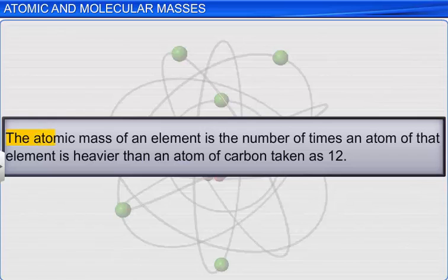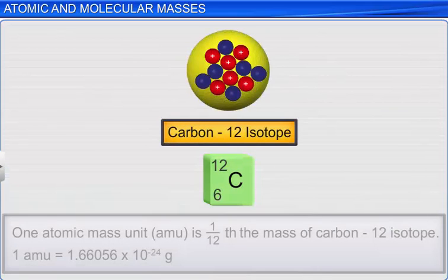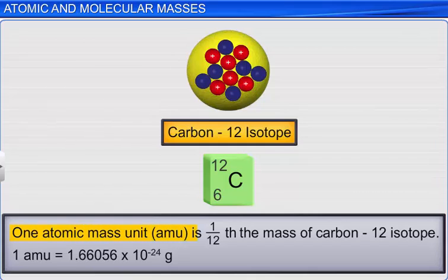Thus, the atomic mass of an element is the number of times an atom of that element is heavier than an atom of carbon taken as 12. As carbon-12 is an isotope of carbon, it is represented as 12C. Therefore, one atomic mass unit is defined as a mass equal to 1 twelfth the mass of carbon-12 isotope. The value of one atomic mass unit was determined to be 1.66056 multiplied by 10 raised to minus 24 grams.